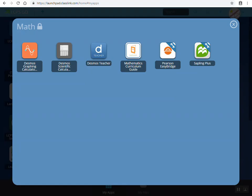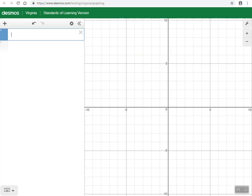How we would like for you to access Desmos, go to LCPS Go and click on the Desmos graphing calculator app. It looks like this. When you do that, your screen will look like this. Please note that it should be green up at the top and say Desmos Virginia Standards of Learning Version. This is the version that you will be using on the online test at the end of this year.